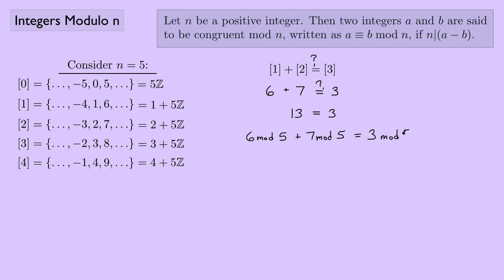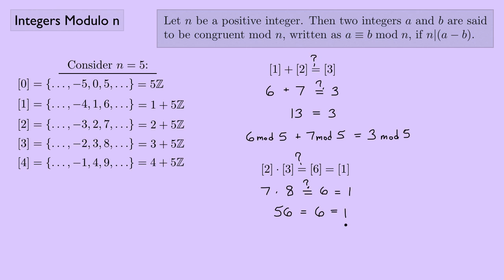Now for multiplication: does [2] times [3] equal [6]? And since 6 mod 5 equals 1, does it equal [1]? I'll pick representatives 7 from [2] and 8 from [3]. Well, 7 times 8 is 56, and 56 mod 5 equals 1. So 7 mod 5 times 8 mod 5 equals 1 mod 5.